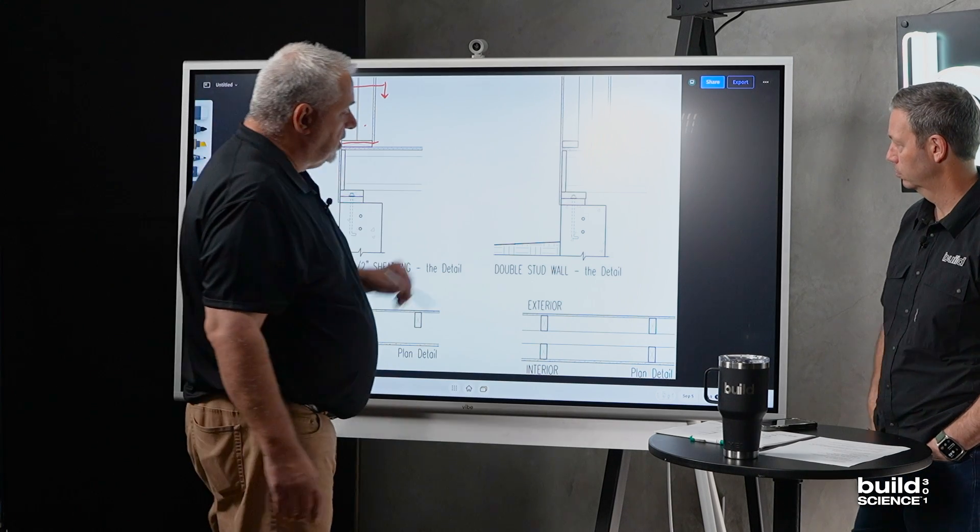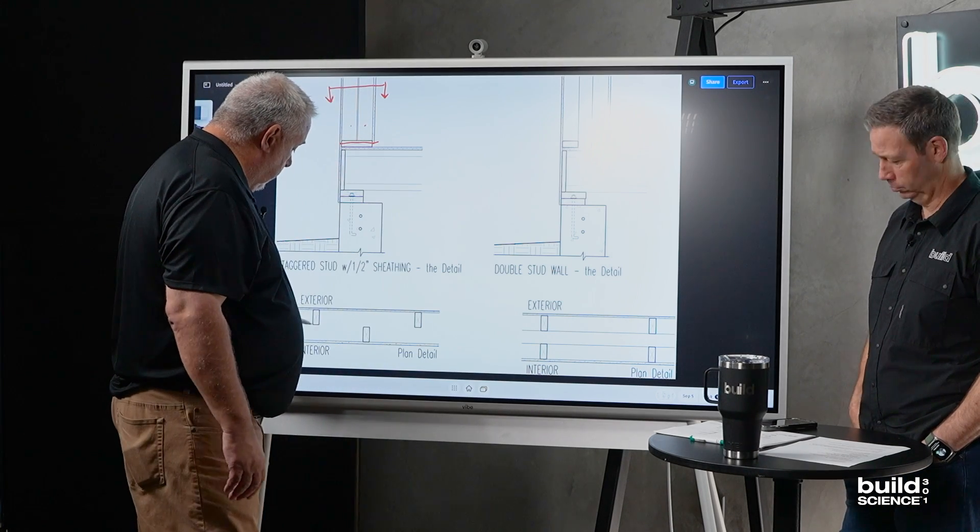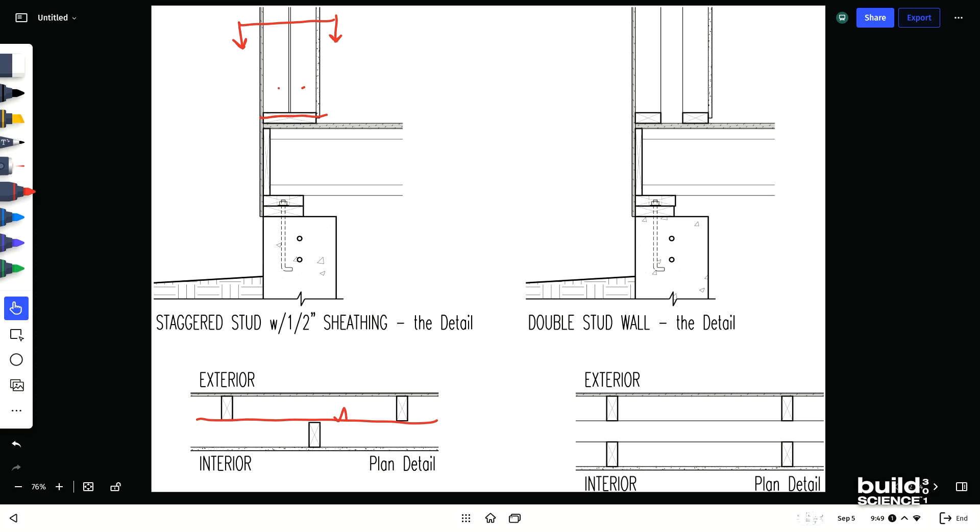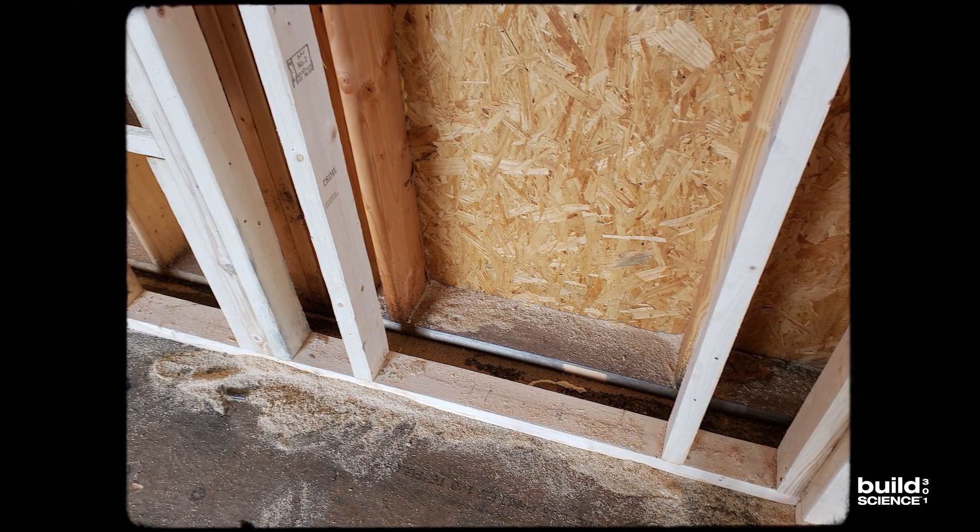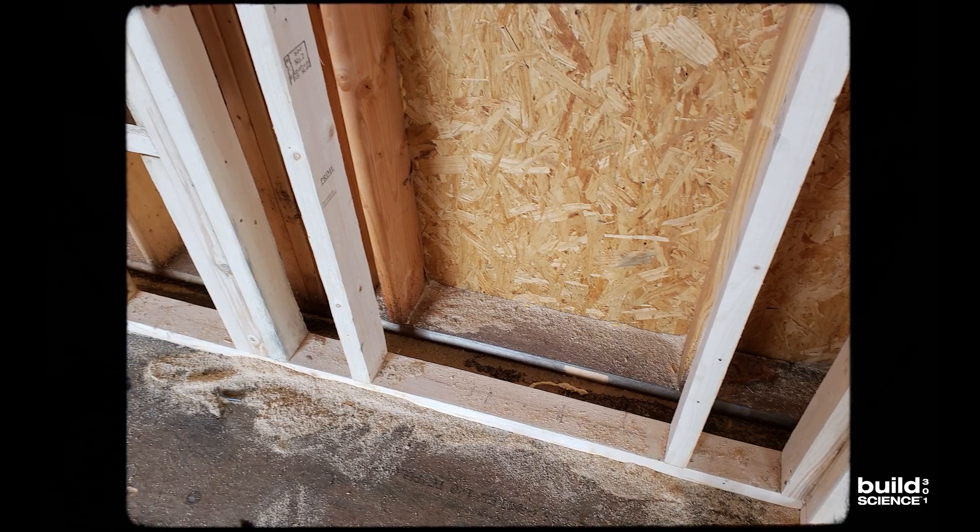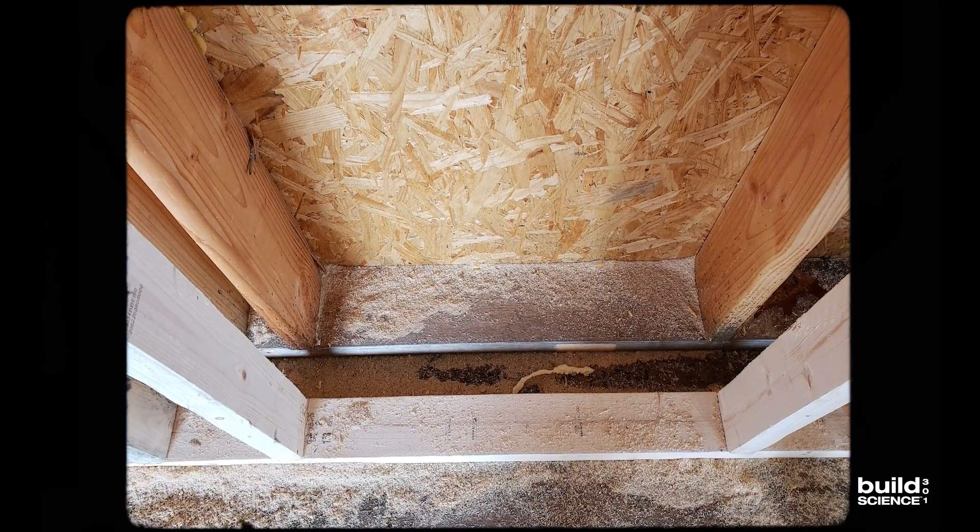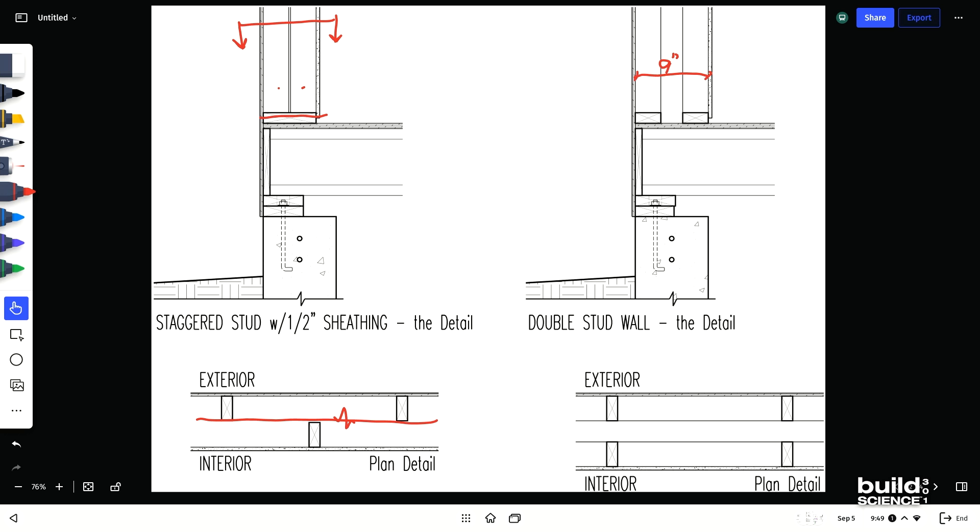And then for the double stud wall, all we're doing is basically putting a break in the wall there and splitting it. And the beauty of the double stud wall that I really like, especially when you're doing passive houses—this can start out at 9 inches, but it could go to 16 if we wanted. Wow.